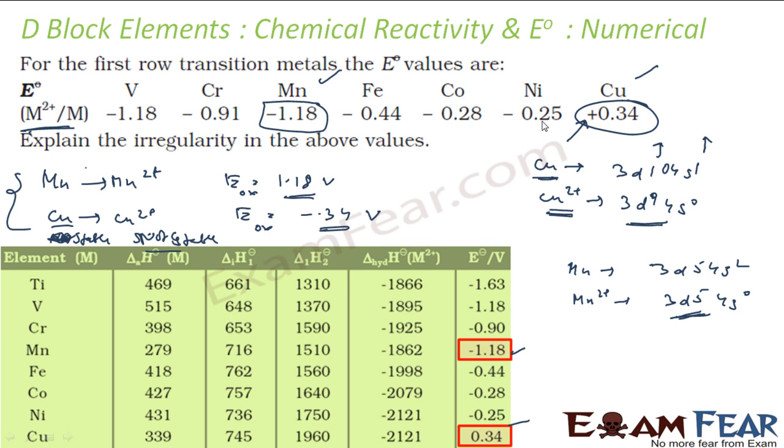In one case, the product is very much stable. In another case, the reactant was stable and the product is not stable. So we got a positive value here, meaning Cu²⁺ to Cu is a feasible reaction. Copper ions can easily convert to copper.